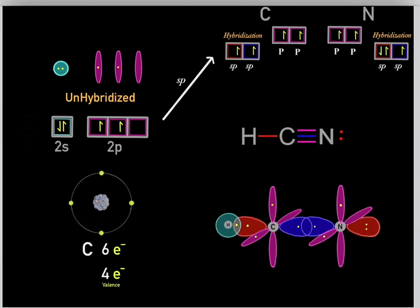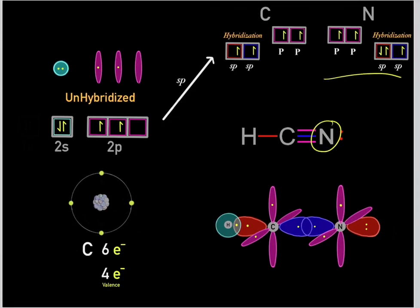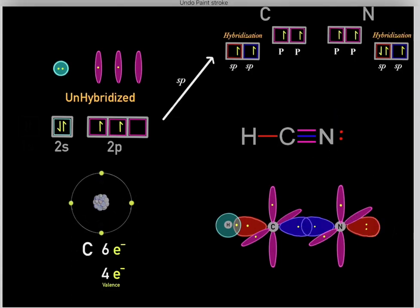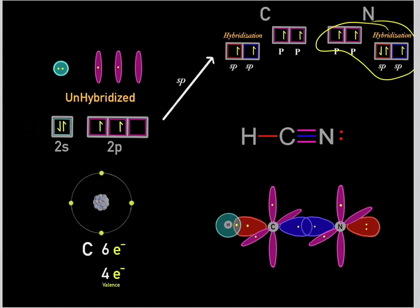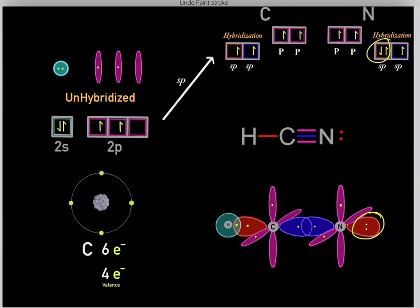In a similar compound, such as HCN, the carbon is sp hybridized and the nitrogen is also sp hybridized. Focusing on this nitrogen: it has one sp hybridized orbital and another sp hybridized orbital. Since nitrogen has five valence electrons and four orbitals, one orbital needs two electrons. So the sp hybridized orbital has two electrons — that's the basis of the lone pair on nitrogen.